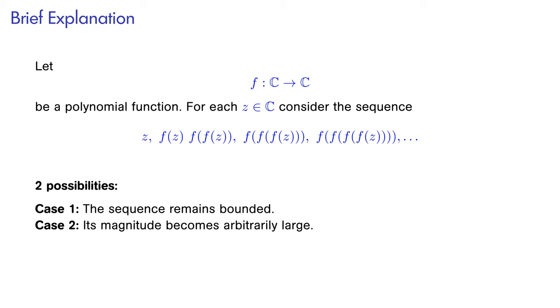In the first case, that is, if the sequence remains bounded, we will color the starting point z in black in the illustration that we will see later on. Otherwise, we mark it in color.